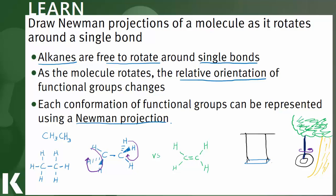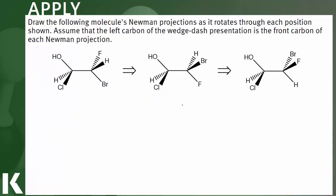So let's take a look at an example. Now in this example we're asked to draw a series of Newman projections, and remember there are actually two Newman projections for each molecule - we could imagine that we're looking at it from the left or looking at the molecule from the right. In this case we're told to assume that the left carbon is going to be the one that we want to have be the front carbon, so we're going to ignore that second possible Newman projection and just draw the first Newman projection for each one.